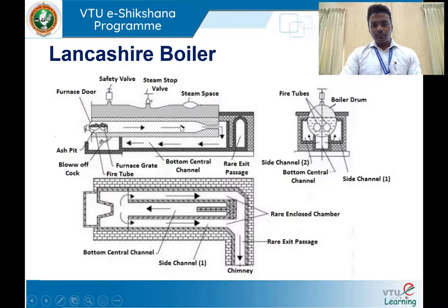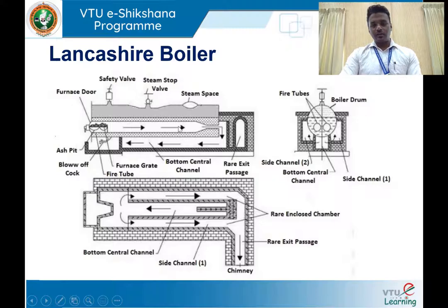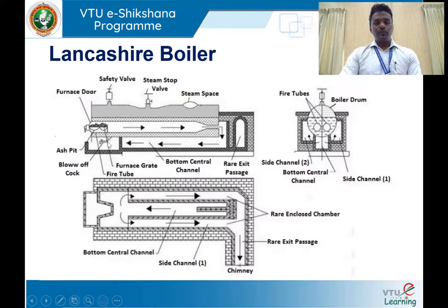One important observation: the flue tube, which has a circular cross-section, changes its cross-section nearer to the rear end to a conical section. The main reason is to increase the velocity of flue gases at the rear end of the boiler shell. The fuel burning takes place in the furnace. Since the Lancashire boiler is an internally fired type, the furnace is placed at one end of the flue tube — it is a part of the boiler shell.